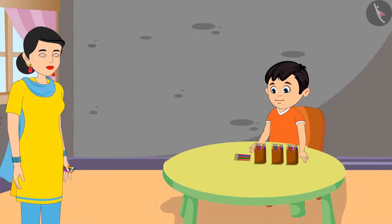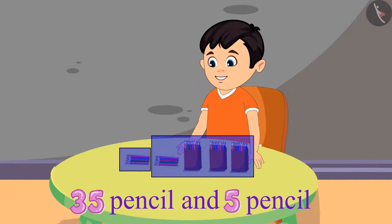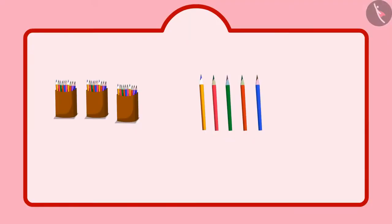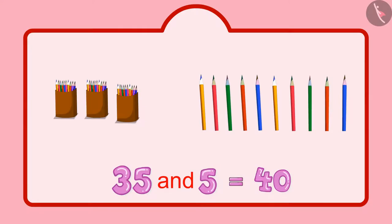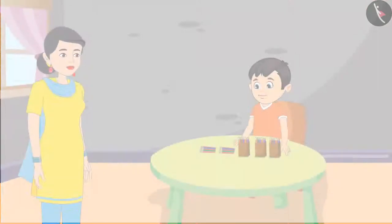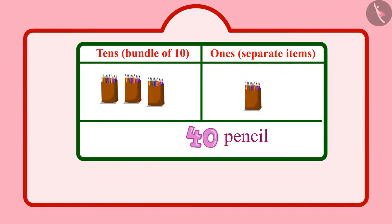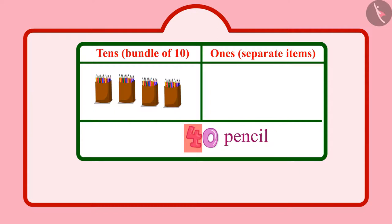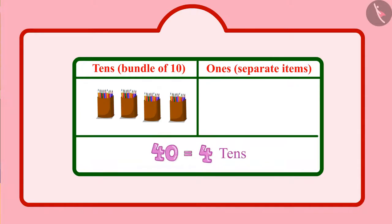After some time, Chotu's mother found some more of his pencils. Chotu, I have got 5 more of your pencils. Keep these together as well. I had 35 pencils and now 5 pencils more, that means 5 units more. After 35: 36, 37, 38, 39, 40. So, now I have 40 pencils. How many tenths do you have now? Mommy, 40 pencils meaning I have 4 tenths. And units? Mommy, there are no units in 40. Yes, Chotu, there are only 4 tenths in 40 and 0 units.